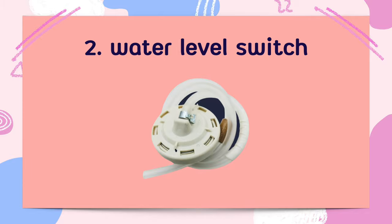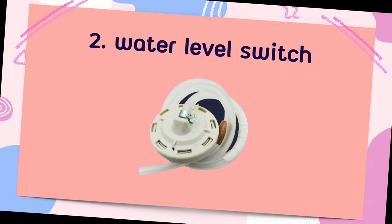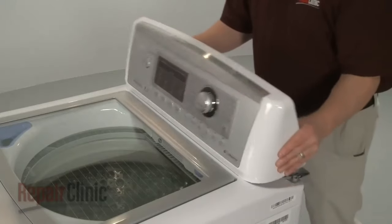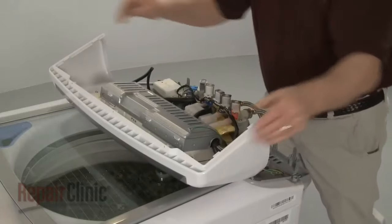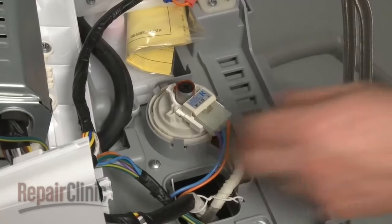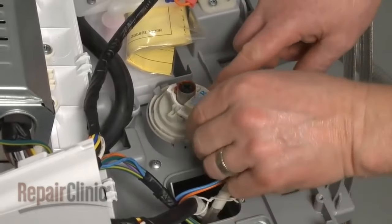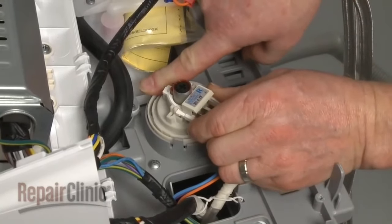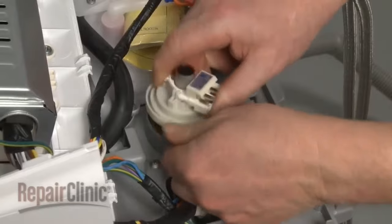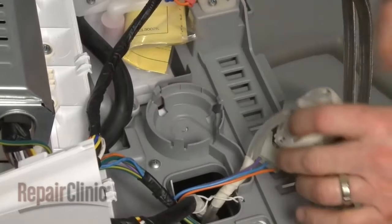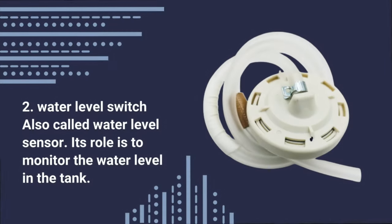Second, Water Inlet Valve Switch. Control Housing. Disconnect the Pressure Switch Wire Connector. Pull the tabs back to release the switch. Also called Water Level Sensor. It is used to monitor the water level in the tank.